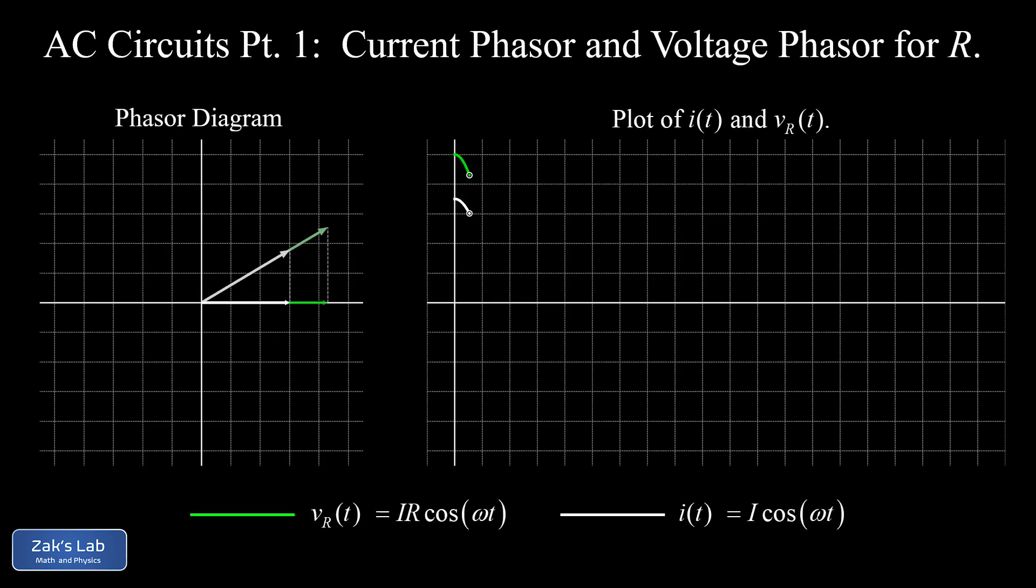In this video we begin our study of alternating current circuits or AC circuits for short by introducing a sinusoidal voltage source and the resulting sinusoidal current in the circuit.